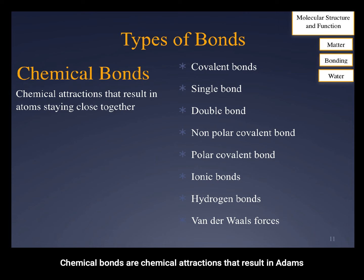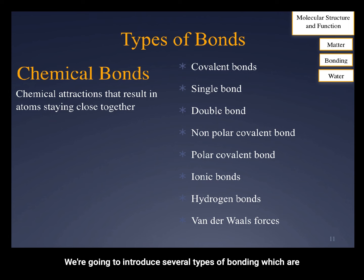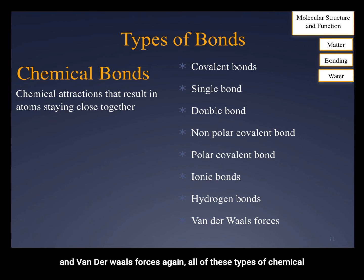Chemical bonds are chemical attractions that result in atoms staying close together. Today we're going to introduce several types of bonding: covalent — single, double, nonpolar, and polar — ionic, hydrogen, and van der Waals forces. All of these types of chemical bonds are necessary for biology.